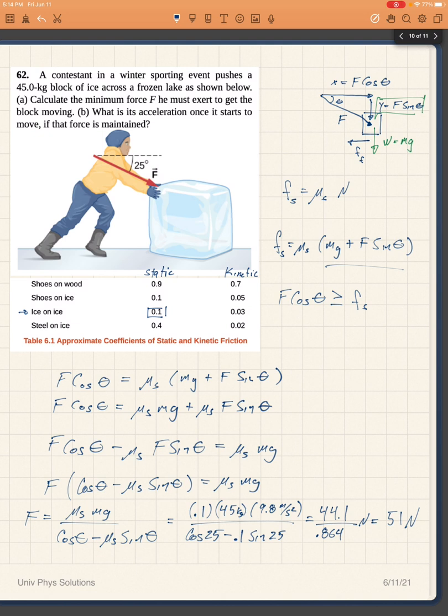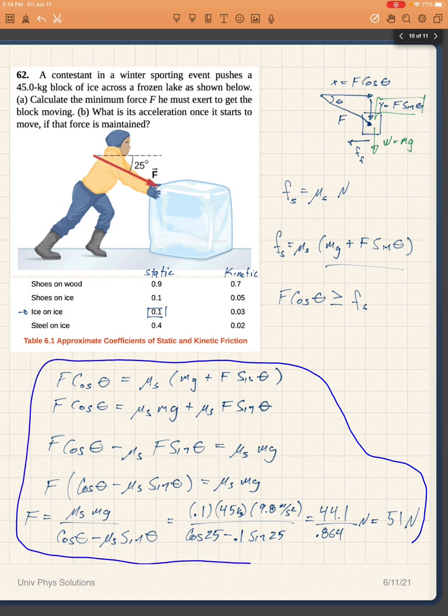Okay now part b requires that we find the acceleration once it starts to move if that force is maintained. So we now know the force, and if this force continues then we expect the block to accelerate because the force of friction will be smaller. There will be a net force which will cause an acceleration so the block of ice will start moving faster and faster.